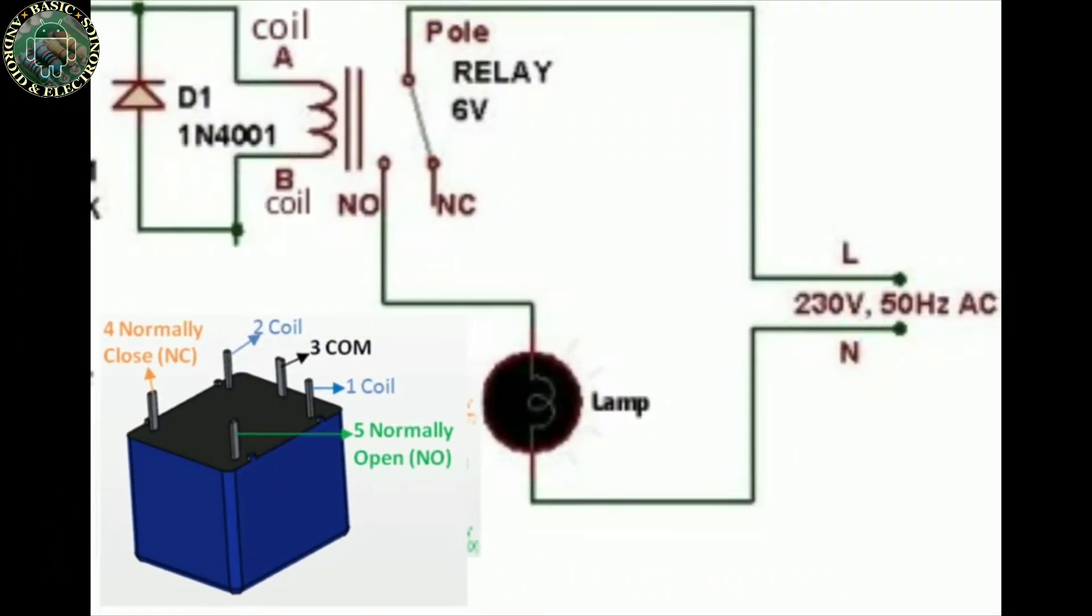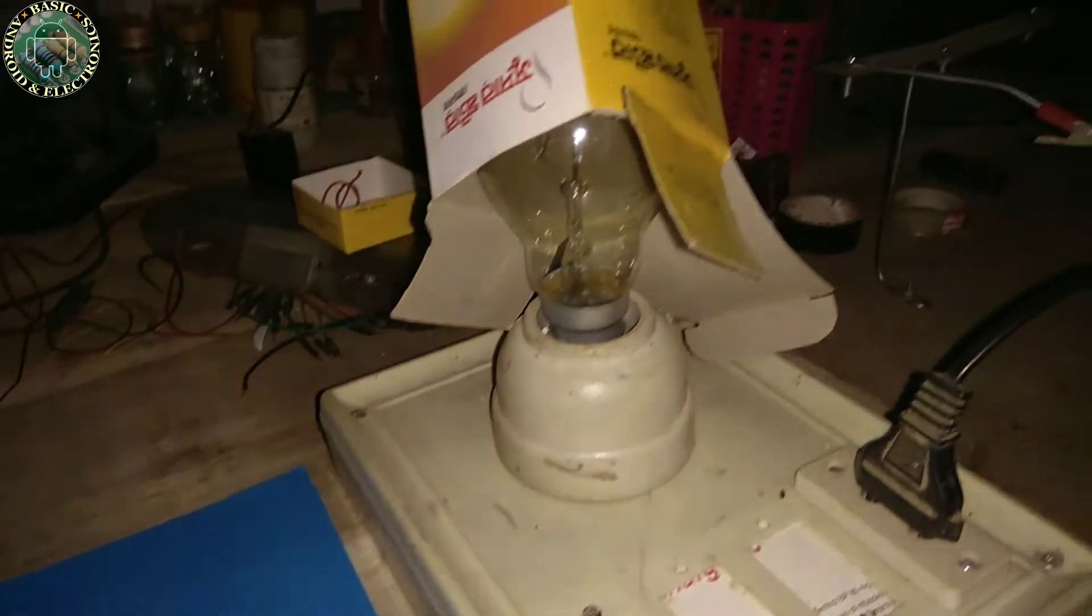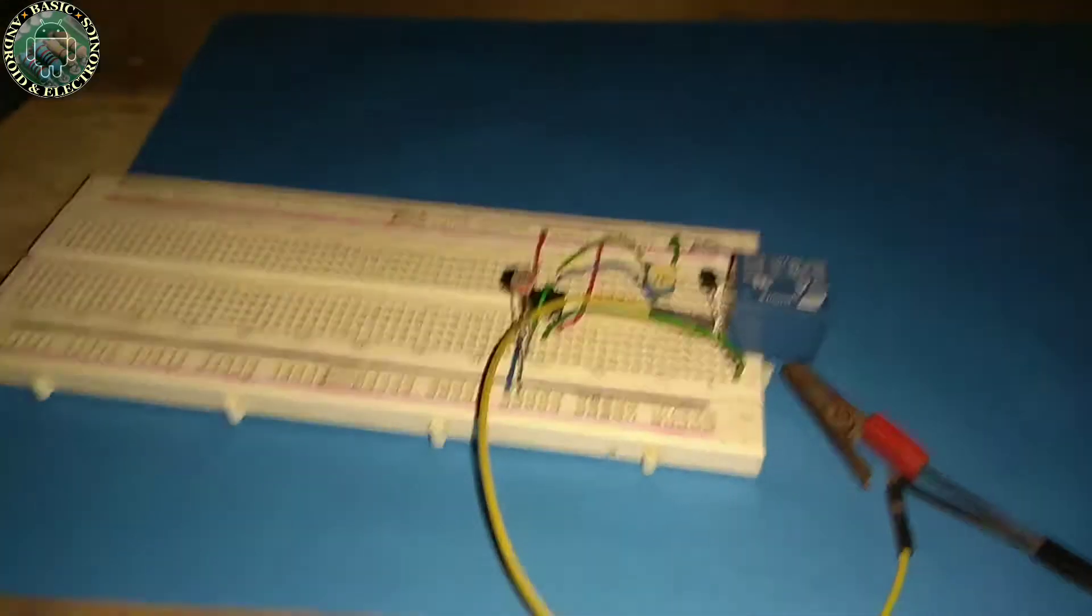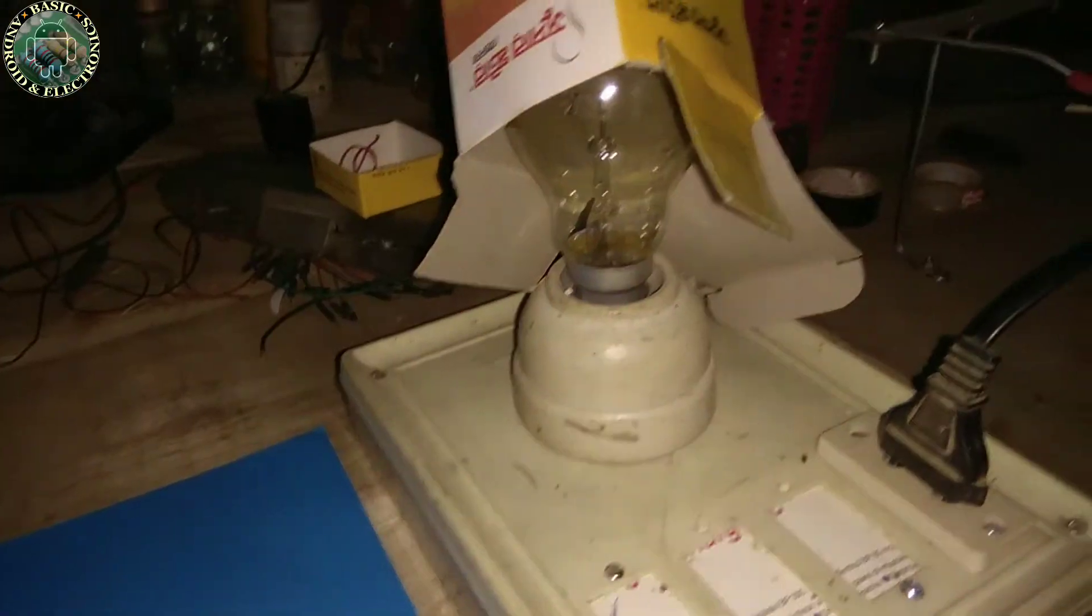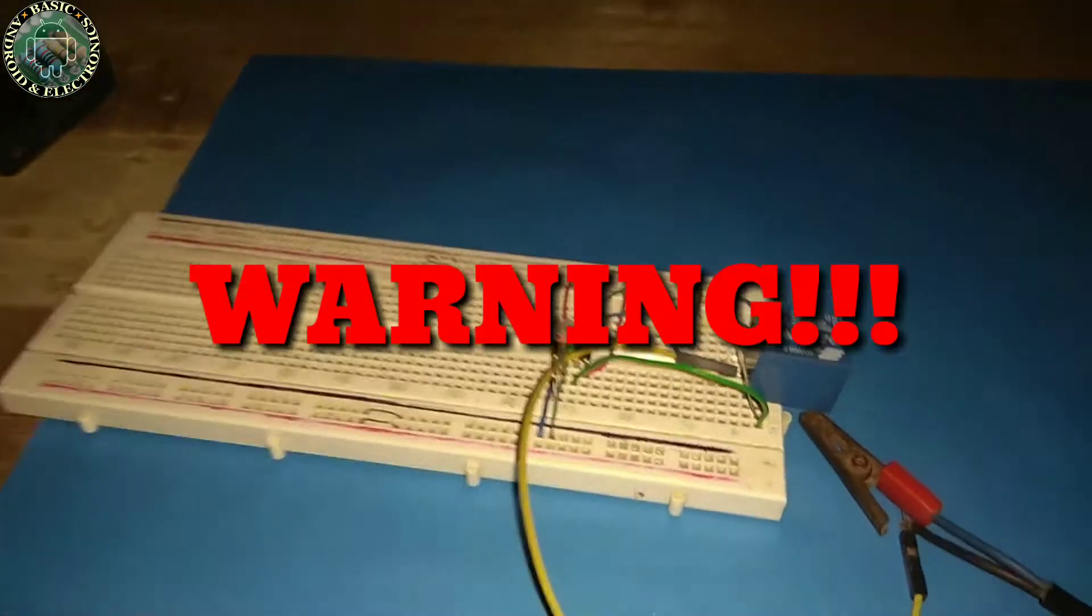Now we see how to connect the lamp with the relay switch. Connect your lamp to the relay switch by using common pin and the normally closed pin of the relay switch. When you connect your relay switch with 220 volt AC, don't touch the relay switch terminals.